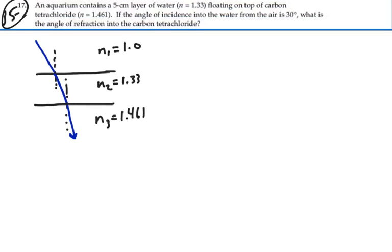So it's going to bend inward towards the normal in each case. Our angle of incidence, which I'll call theta 1, is our angle in the air. Then we're going to have an angle theta 2, which will be our refracted angle in the water. But because of these parallel lines and one line — the blue line — intersecting, the angle of incidence from the water into the carbon tetrachloride will be the same as the angle of refraction from the air into the water. So those internal angles will be equal to theta 2.